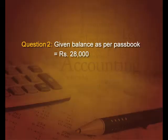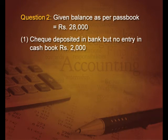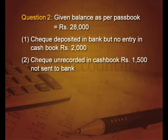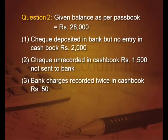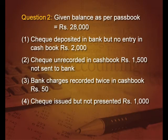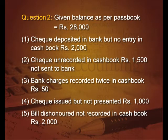I hope you have understood the basics. Let us do one more example where we start with balance as per pass book. The balance as per pass book is given as 28,000. First entry: check deposited in bank but no entry in cash book — 2,000 rupees. Second: check unrecorded in cash book and not sent to the bank — 1,500. Third: bank charges recorded twice in cash book — 50 rupees. Next: check issued but not presented — 1,000. Next: bill dishonored but not recorded in cash book — 2,000.